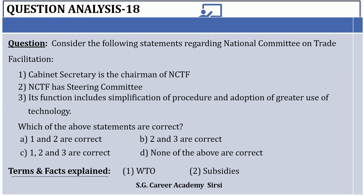The terms explained here are WTO and subsidy. First of all, National Committee on Trade Facilitation is related with the WTO. NCTF is the national binding aspect — each sovereign government is to implement its obligation towards WTO where consensus has been reached on a particular agreement or sector. So the first statement, that Cabinet Secretary is the chairman of NCTF, is correct. Usually the head of the administrative functionary is the chairman of the National Committee on Trade Facilitation. In India, it is quite natural that the Cabinet Secretary heads the NCTF.